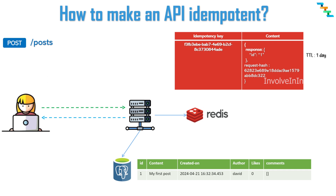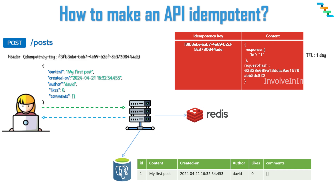Now if the same request reaches the server again due to a retry, the server checks the idempotency key from the header in the Redis cache. Since we already have this key in the Redis cache, you can optionally convert the incoming request to a hash and check if it matches the stored request hash. If it matches, the server skips processing the request again and sends the response already saved in the Redis cache.